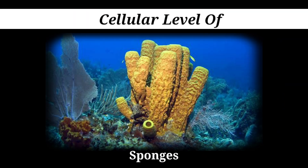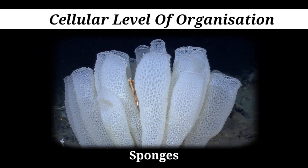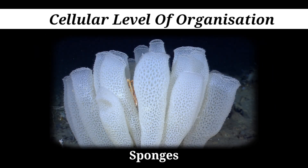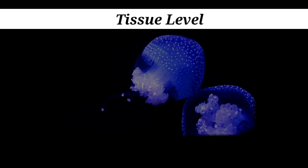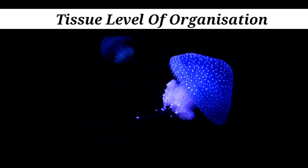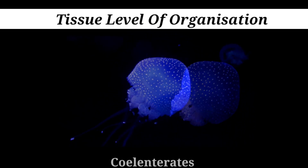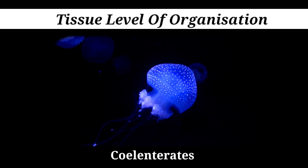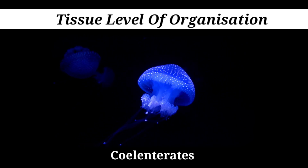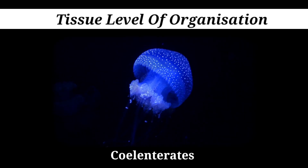Sponges exhibit a cellular level of organization, where cells are loosely arranged. Tissue level of organization is more complex and is displayed in cnidarians. Here, the cells that perform the same function are arranged into tissues.